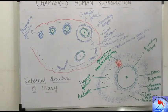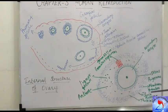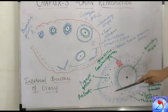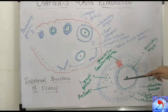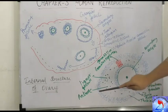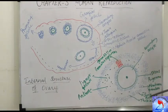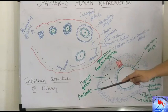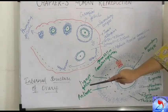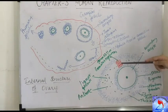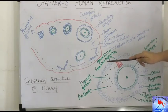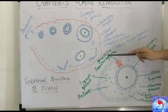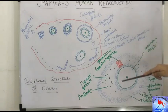The membrana granulosa is made up of two layers: the outer layer is called theca externa, and the inner layer is called theca interna. Between the secondary oocyte and the outer membrana granulosa, there is a cavity called the antrum, which is filled with a viscous liquid called liquor folliculi, produced by the follicular cells. The secondary oocyte is not free-floating in this liquid — it is fixed by a mass of cells called the cumulus oophorus, or germ hill.